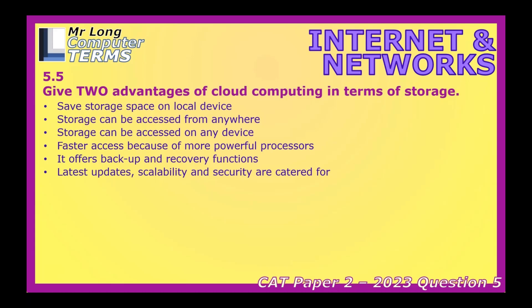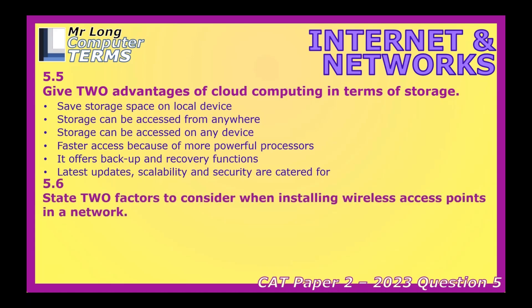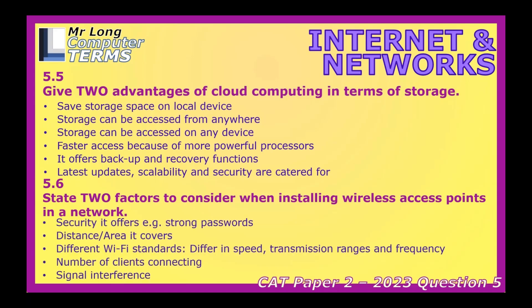Setting up your own Wi-Fi network can be a bit of a challenge. First and foremost, security — you want to use a strong, unique password to prevent unauthorized access. Then consider the coverage area: how far does the signal need to reach? In a big house you need the signal to get to every room. There are also different Wi-Fi standards that offer different speeds and ranges, so choosing the right one is important. And don't forget about interference — things like microwaves and cordless phones can disrupt your signal.